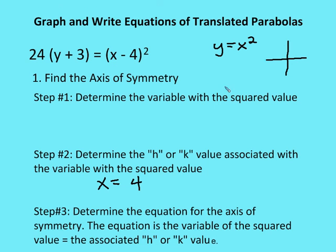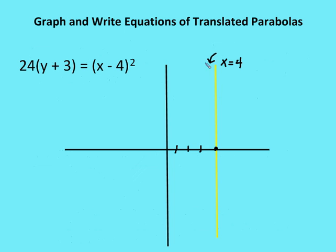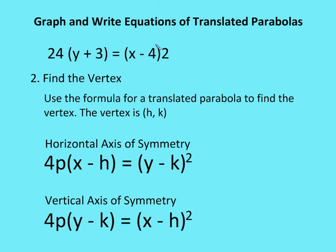So to summarize step 1: find the squared variable (x), find the h or k value associated with it (4), and write the axis of symmetry as x equals 4. Go ahead and graph x equals 4 on the coordinate plane. Step 2 — find the vertex: the vertex is the (h, k) value from the equation, which is (4, negative 3). Since the axis of symmetry is vertical, we confirm the vertex is at (4, negative 3) and plot it.